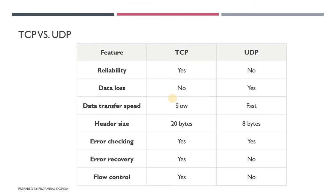The second difference is data loss. If we are using TCP protocol, there is no data loss. While in UDP, some data packets may be dropped. The next difference is data transfer speed: TCP is slow and UDP is fast, because in UDP some data packets may be dropped.